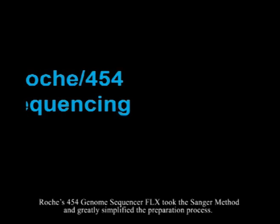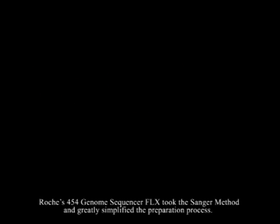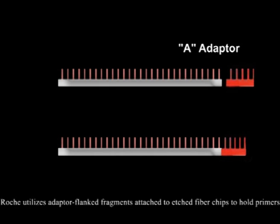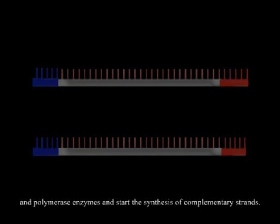Roche's 454 genome sequencer FLX took the Sanger method and greatly simplified the preparation process. This sequencer became widely available as a commercial product in 2005. Roche utilizes adapter-flanked fragments attached to etched fiber chips to hold primers and polymerase enzymes and start the synthesis of complementary strands.